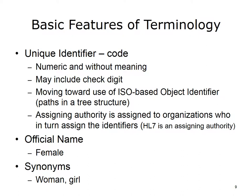Basic features of terminology include a unique identifier or code with these characteristics: numeric and without meaning, may include a check digit, moving toward use of ISO-based object identifiers called OIDs — paths in a tree structure. Assigning authority is assigned to organizations who in turn assign the identifiers. HL7 is an assigning authority at 2.16.840.1.113883 under Joint ISO-ITU-T Country US Organization HL7. An example of an official name is 'female.' Terminology may have synonyms such as woman or girl for female. Codes have the value of being absolute, precise, and unambiguous. If codes are what we exchange, we cannot misinterpret.